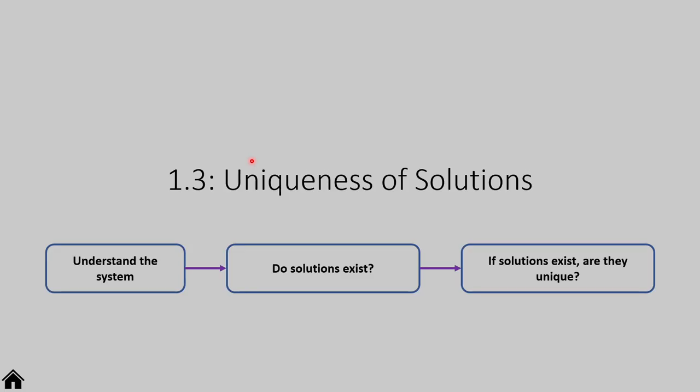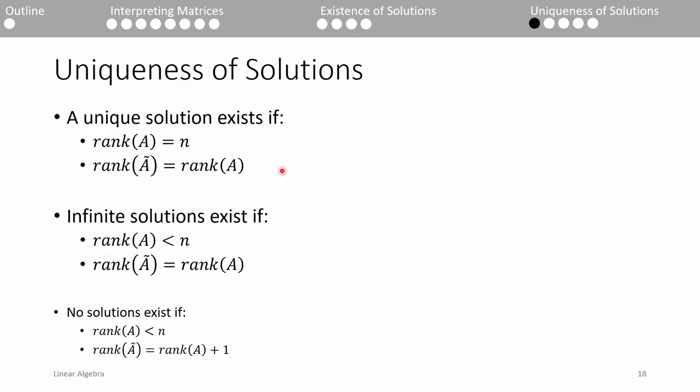By now we've covered the existence of solutions. Now pretend we have a consistent system so at least one solution exists. Now we want to know if there's only one solution or if there are multiple. We already know that in order to have at least one solution, the ranks of A and A tilde must match. But to determine if we have one or multiple solutions, we compare the rank of A to N. If the rank of A is the same as N, we only have one solution. If not, we have infinite solutions. And of course, we know this must be true if there are no solutions.